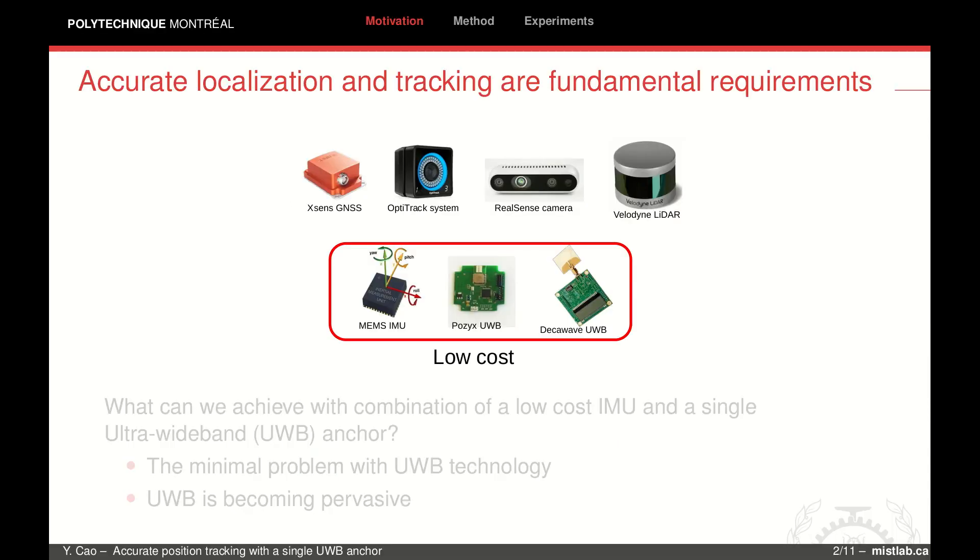We know that localization and tracking are basic requirements of any mobile robot. A great number of different sensors provide solutions in different situations, like GPS for outdoor localization, a motion capture system inside a laboratory, or cameras and LADAR for simultaneous localization and mapping.